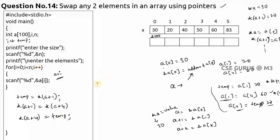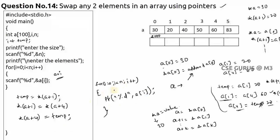Write a for loop: for i = 0, i < n, i++, and print a[i] using %d format. After executing these statements, a[1] will have 60 and a[4] will have 20. This is simple swapping using pointers.